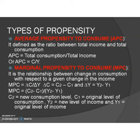So ΔY = Y2 − Y1. Therefore MPC = (C2 − C1) / (Y2 − Y1). MPC = ΔC / ΔY, where ΔC = C2 − C1 and ΔY = Y2 − Y1. These are the two types of propensity to consume.